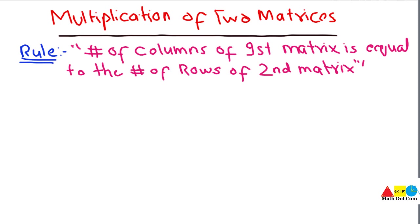For that purpose there is a rule that you have to keep in mind in order to multiply two matrices. The rule is: the number of columns of the first matrix must be equal to the number of rows of the second matrix in order to make the multiplication possible. This rule is very important — if it is not satisfied, multiplication is not possible.